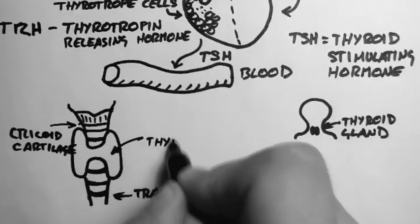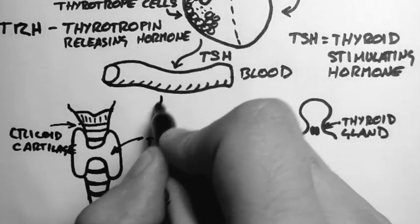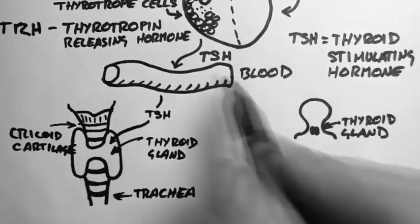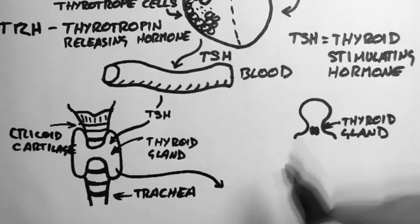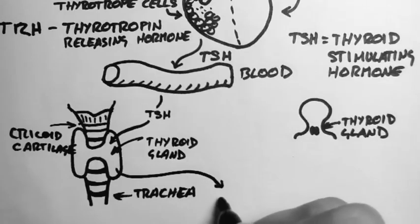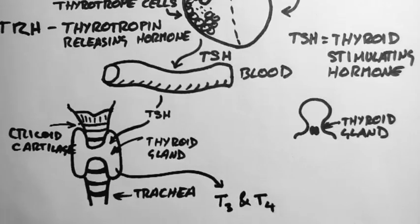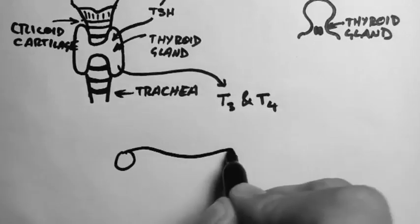So this thyroid gland is an H-shaped structure. And it receives the TSH from the bloodstream. Now in response to TSH, the thyroid releases T3 and T4, which are known as thyroid hormones. And these get released back into the blood.